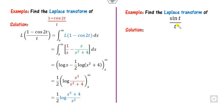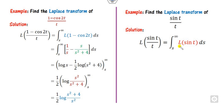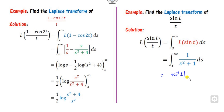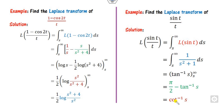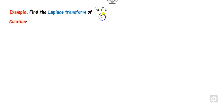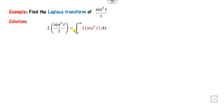Look at the next question: sin(t) divided by t. You integrate the Laplace of sin(t), which is 1/(s²+1), from s to infinity. The integration gives tan⁻¹(s) evaluated from s to infinity. tan⁻¹(∞) is π/2, so the answer is π/2 − tan⁻¹(s), which is nothing but cot⁻¹(s). That is the right answer.